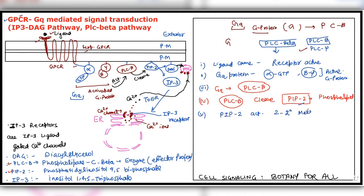The breakdown of PIP2 activates two secondary messengers. We discussed this concept before — that secondary messengers can be activated, like in the cyclic AMP pathway, where calcium was a secondary messenger. Here too there are secondary messengers: DAG and IP3. Looking at this pathway: ligand arrives, receptor active, G protein active — specifically GQ protein. So the G protein type here is GQ. GS and GI also exist.